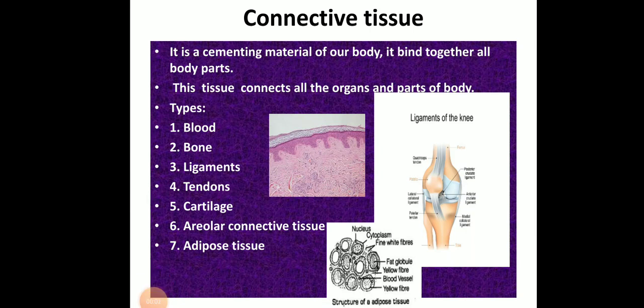Good morning students, let's start today's session with connective tissue. In animal tissue there are four types: the first is epithelial tissue, the second is muscular tissue, the third is connective tissue, and the fourth is nerve tissue or nervous tissue. I have already explained epithelial tissue and muscular tissue, and today we are going towards the third one — connective tissue.